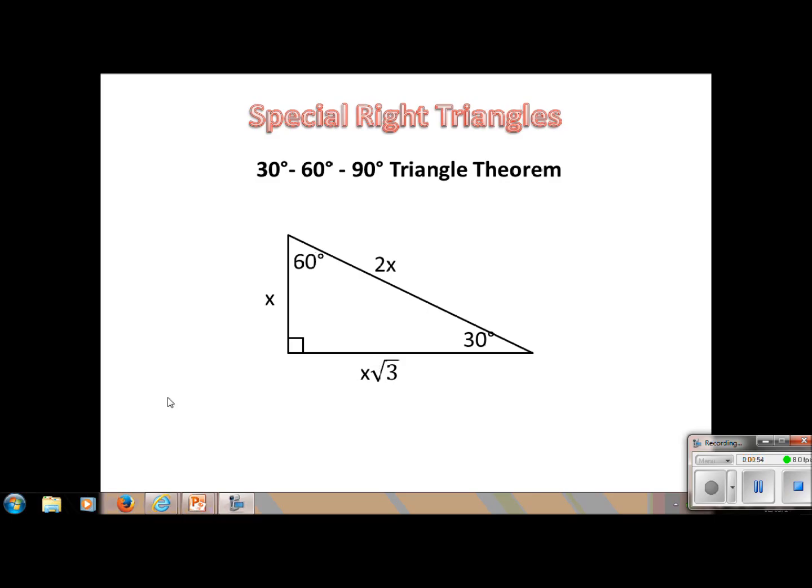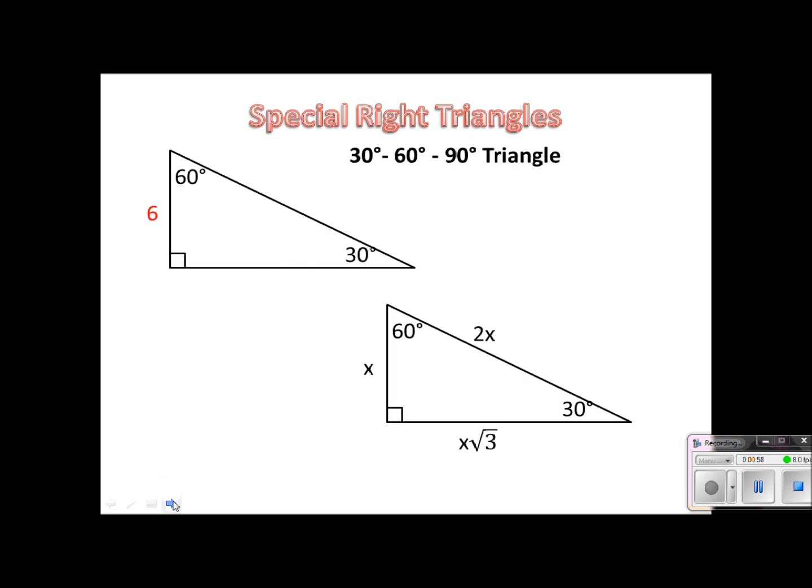Let's plug in some numbers because I think that will make a lot more sense. So for example, if I were to give you that the side opposite the 30 degrees had a measurement of 6, well if we look down here, we know that the hypotenuse is always double the short side or double the one opposite the 30 degrees, the hypotenuse would then be 12. We just doubled it.